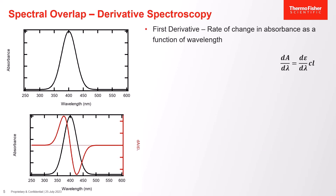Starting with the general definition: the first derivative in the context of absorption relates to the rate of change of absorption as a function of wavelength — essentially the slope of the absorption curve across the spectrum. This inherently requires the derivative of the molar extinction coefficient, which is also wavelength dependent, however the concentration will not change by taking the first derivative, as shown in the math equation. For the absorption spectrum, the first derivative will show a maximum and minimum, and where that maximum and minimum reach an inflection point we will see the location of our lambda max — allowing us to qualitatively assess the data.